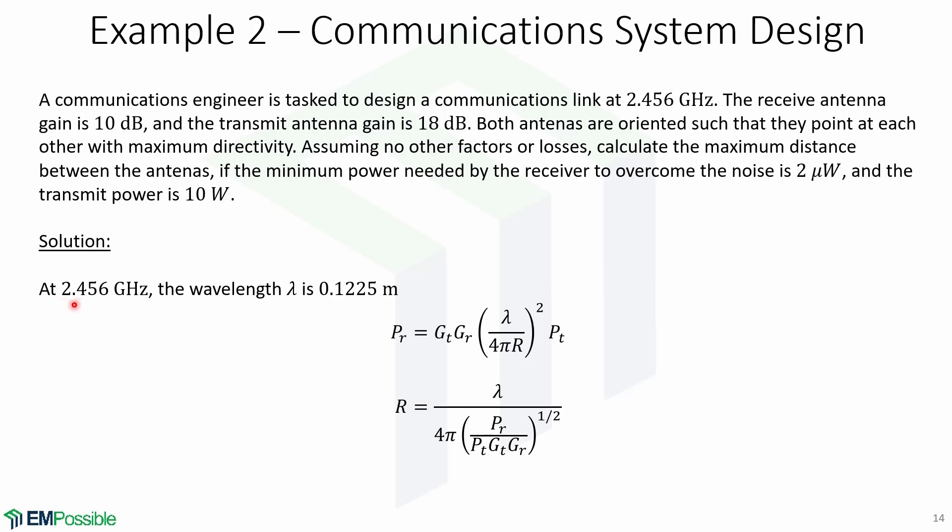For the solution, at this frequency of 2.456 GHz, the wavelength is given by this. For the Friis formula, PR is given by this. And so solving for R, we obtain this expression.